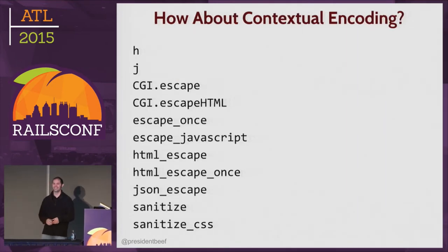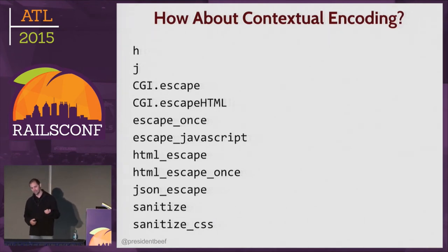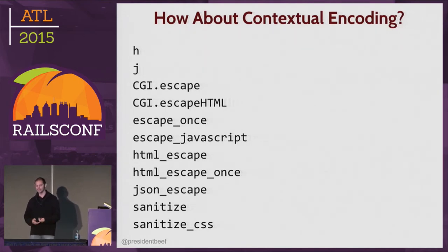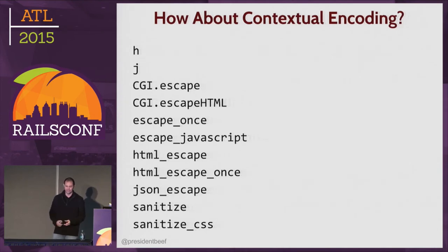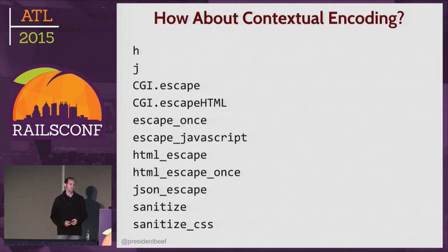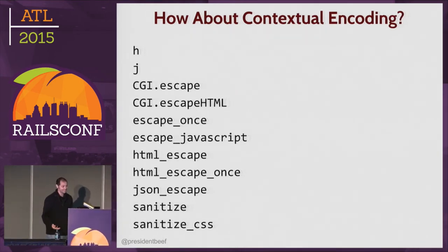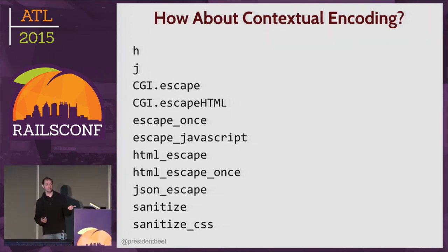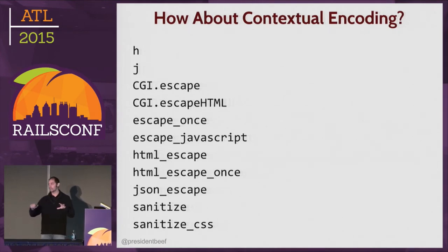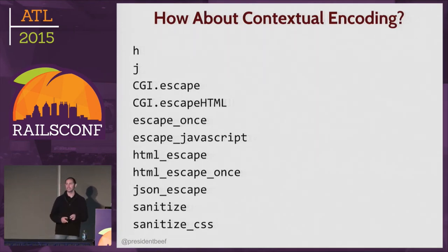What would be really nice is contextual encoding — who knows what all these methods do? There's one called sanitize. Sanitize what? From what? To what? And then you have html_escape, escape_once, escape_javascript — like cgi.escape. You probably can't guess what each does. Contextual encoding would tell where you are on a page — inside a tag, in JavaScript, inside an attribute — and do the proper escaping automatically. It would be nice if someone implemented it.